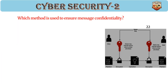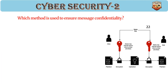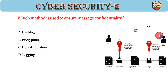Which method is used to ensure message confidentiality? Answer: B. Encryption. Encryption converts plaintext to ciphertext. Protects data from unauthorized access. AES and RSA are common encryption methods.